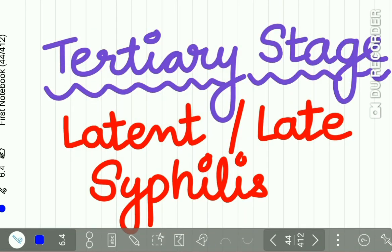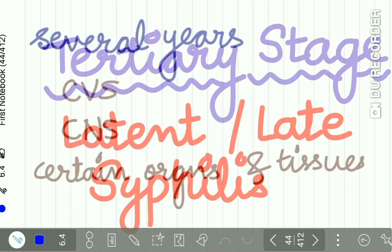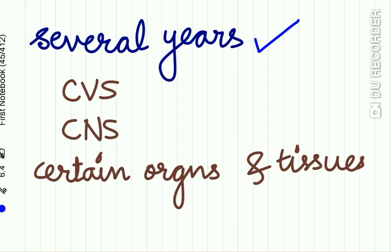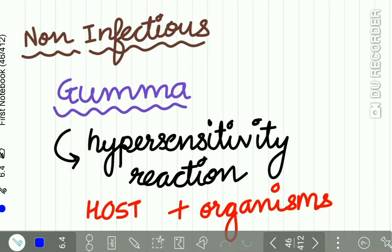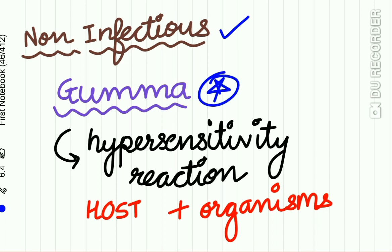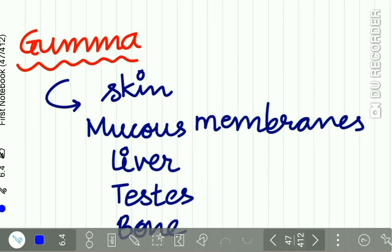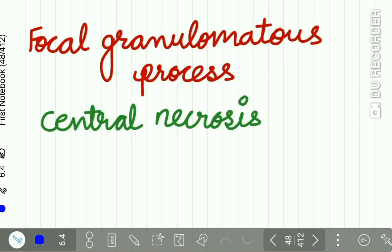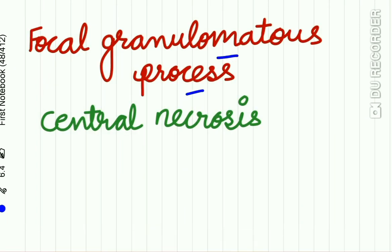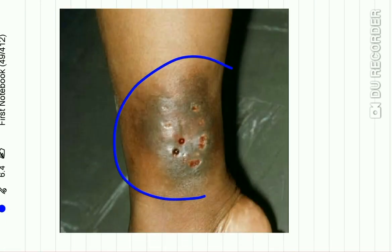The tertiary stage, also called latent or late syphilis, occurs several years after the primary infection. It involves the CVS, CNS, and certain organs and tissues. It is non-infectious, and the characteristic lesion is the gumma, believed to be a hypersensitivity reaction due to host-organism interaction. The gumma may occur on skin, mucous membrane, liver, testes, and bones. It is a focal granulomatous process with central necrosis.